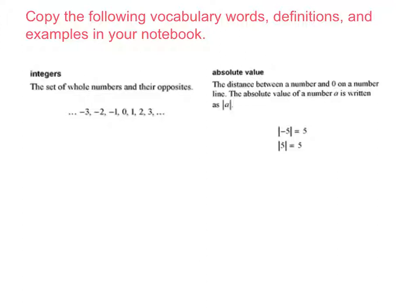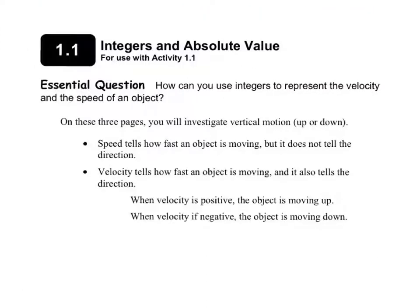Be sure you copy everything exactly as it appears on the screen. We'll be beginning today's activity on page 3 in your record and practice journal, so be sure you have that open. Activity 1.1 is Integers and Absolute Value. The essential question says: how can you use integers to represent the velocity and speed of an object?